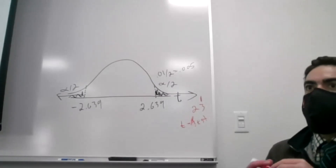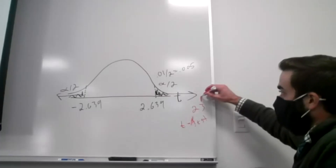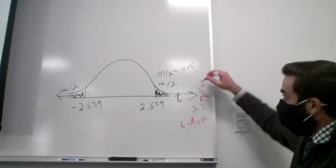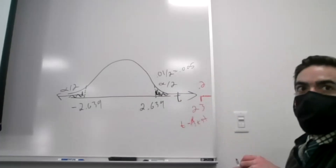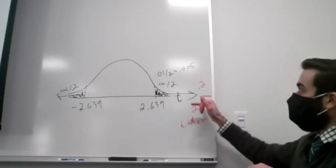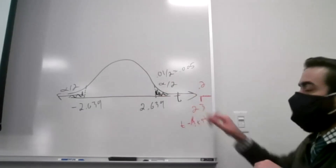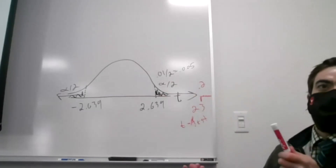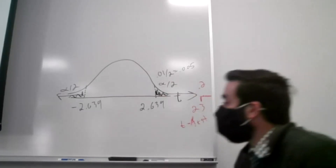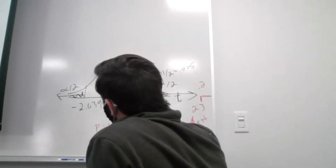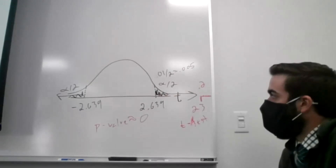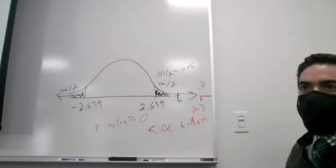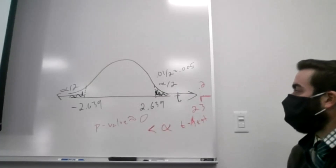What if I had asked you to find the p-value? The p-value is the probability of seeing the test statistic or anything more extreme. With a two-tailed test, I multiply by two. The area to the right of 2.639 is 0.005; the area to the right of 23 is basically zero. Almost zero times two is still going to be very close to zero. So I have a really low p-value — approximately zero. If I only reject when that p-value is less than alpha, zero is going to be less than any alpha, so I can reject at pretty much any level.